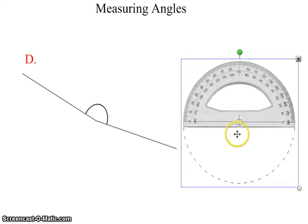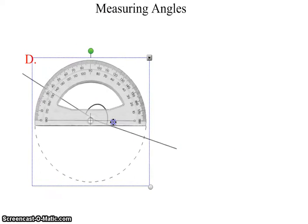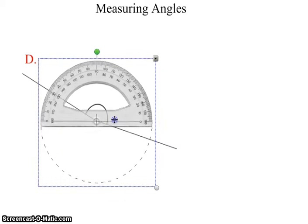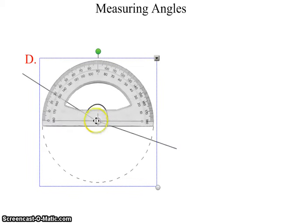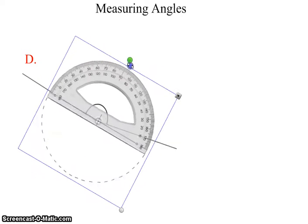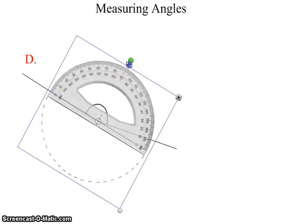Finally for question D you take your protractor like we have in the previous examples and you set the vertex on the center and line up the protractor and this time I'm using this ray the ray that's on the left side as my measuring for the straight edge. I will use the outside set of numbers I will get approximately 170 degrees for the measure in Part D.